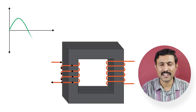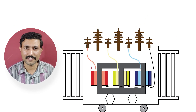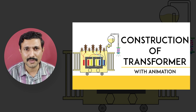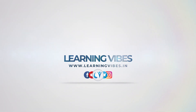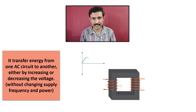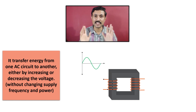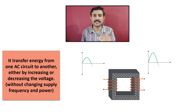Transformer is one of the most efficient devices and is widely used across industry. In this video we are going to learn the working of transformer with animation. It transfers energy from one AC circuit to another AC circuit by either increasing or decreasing the voltage level, while keeping the supply frequency constant. The power is constant at input and output, assuming there is no loss in the transformer.